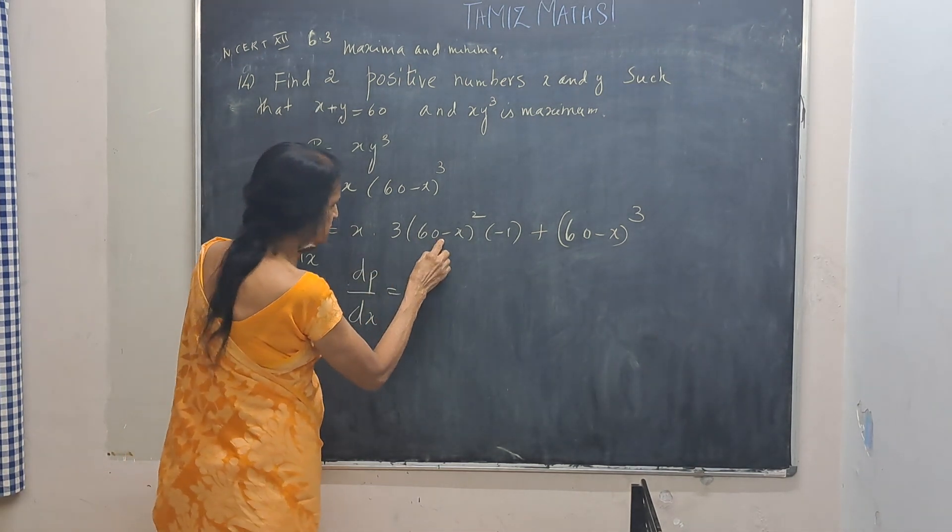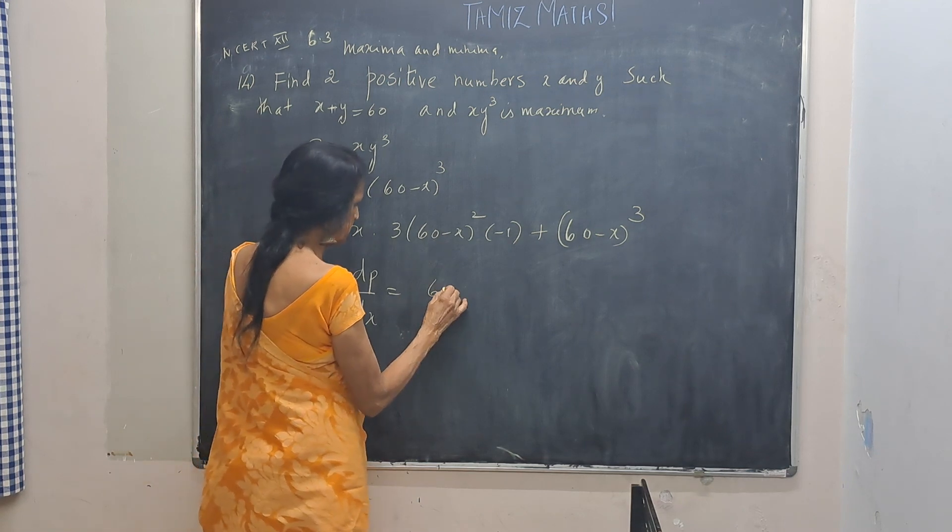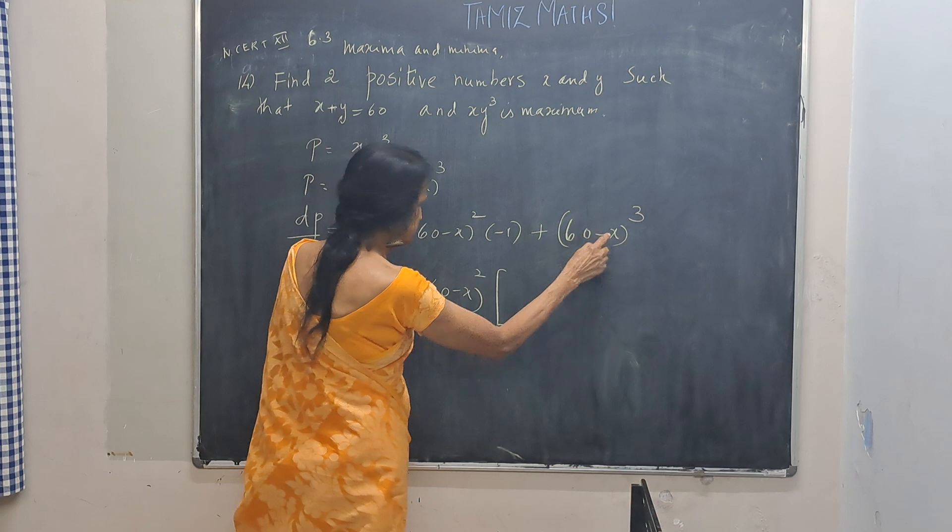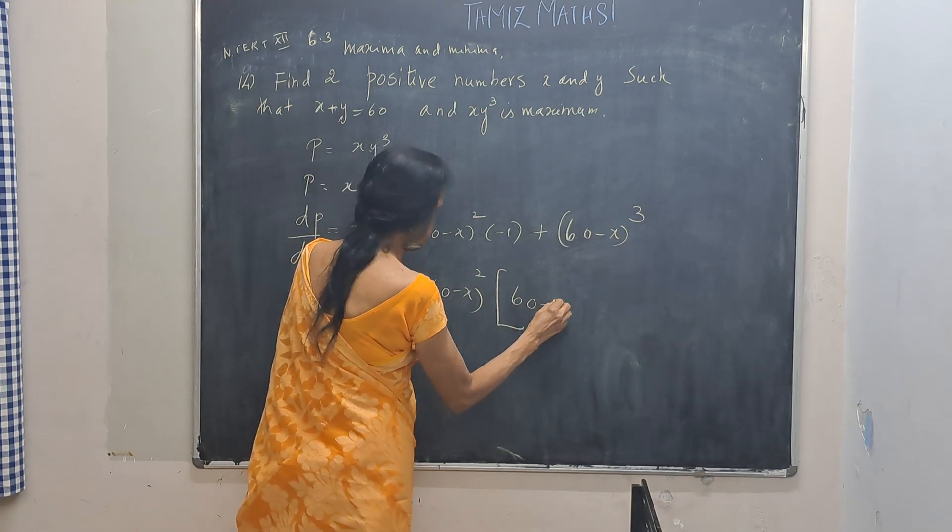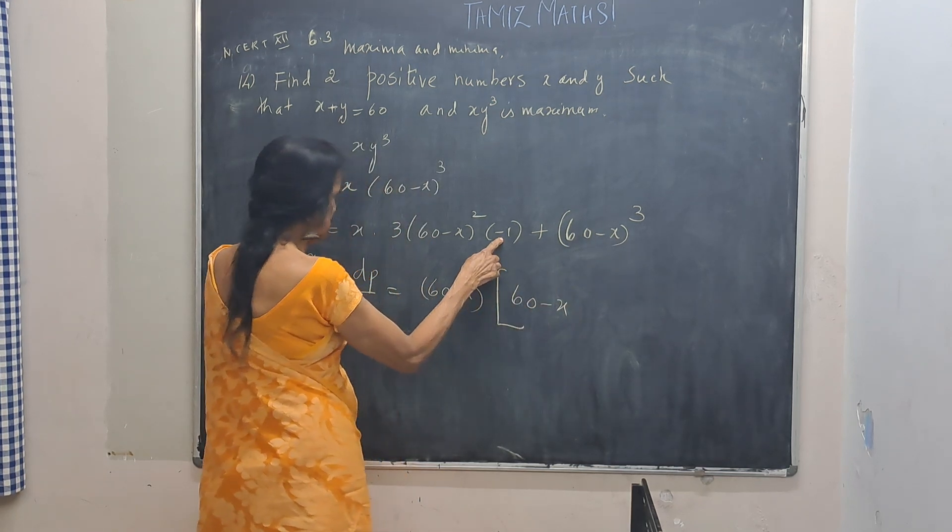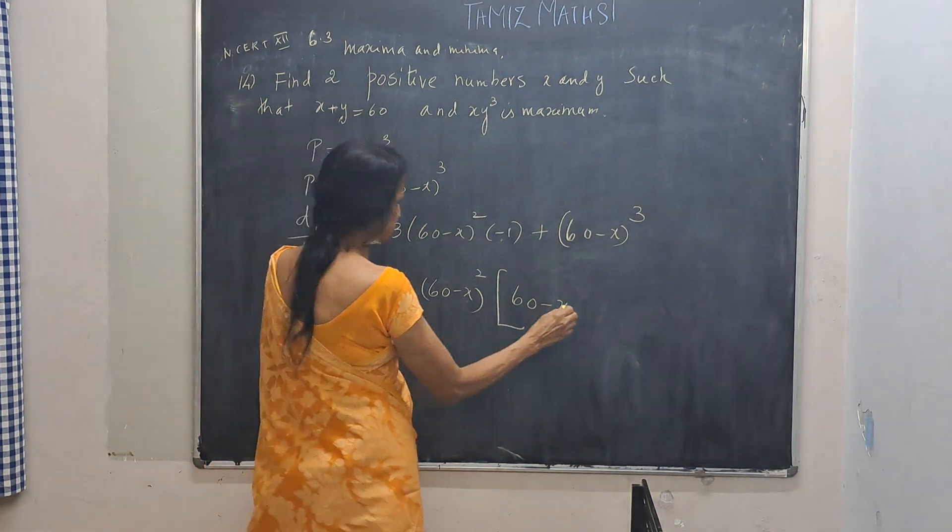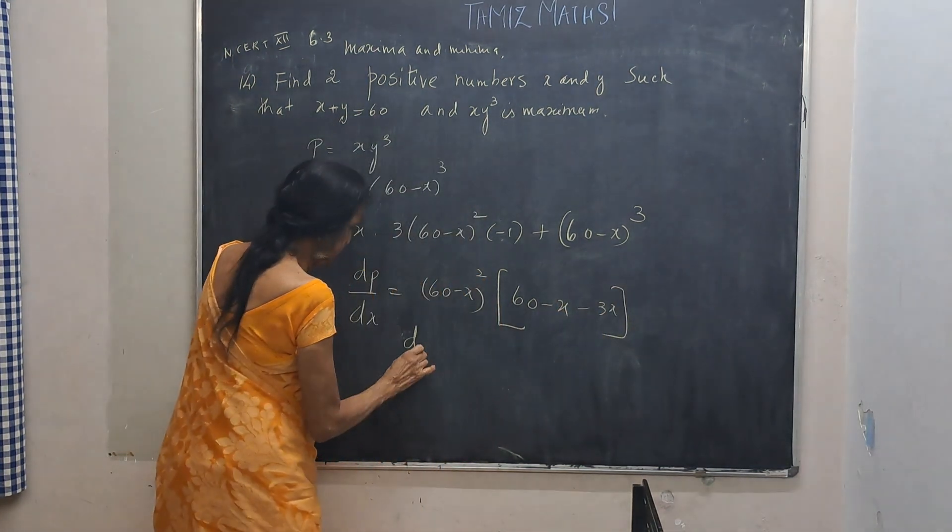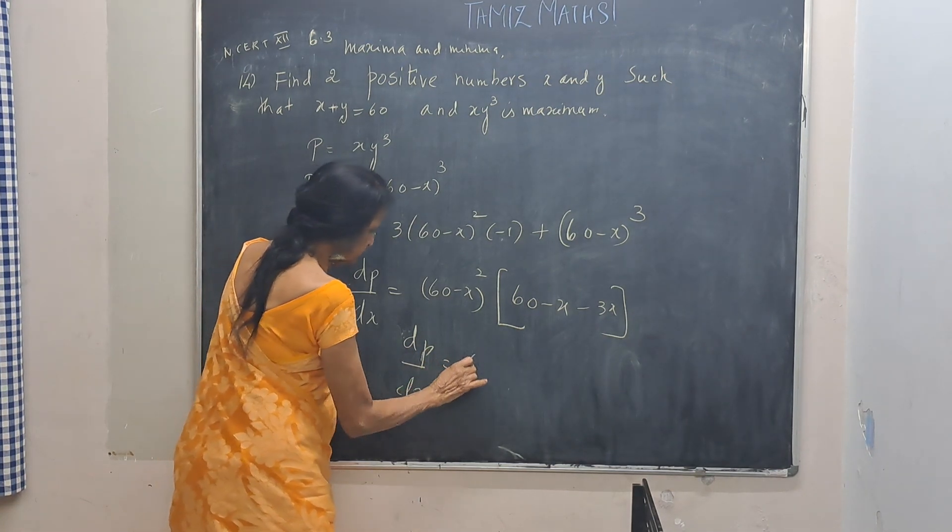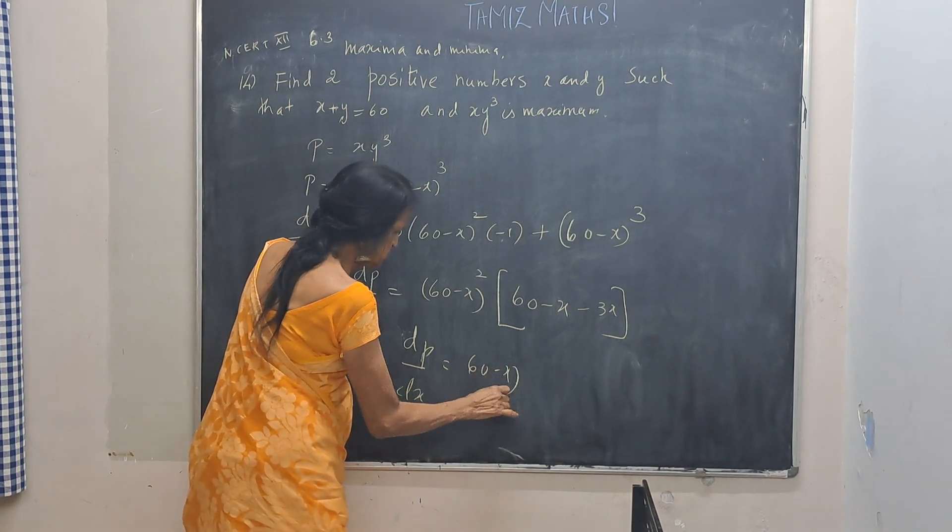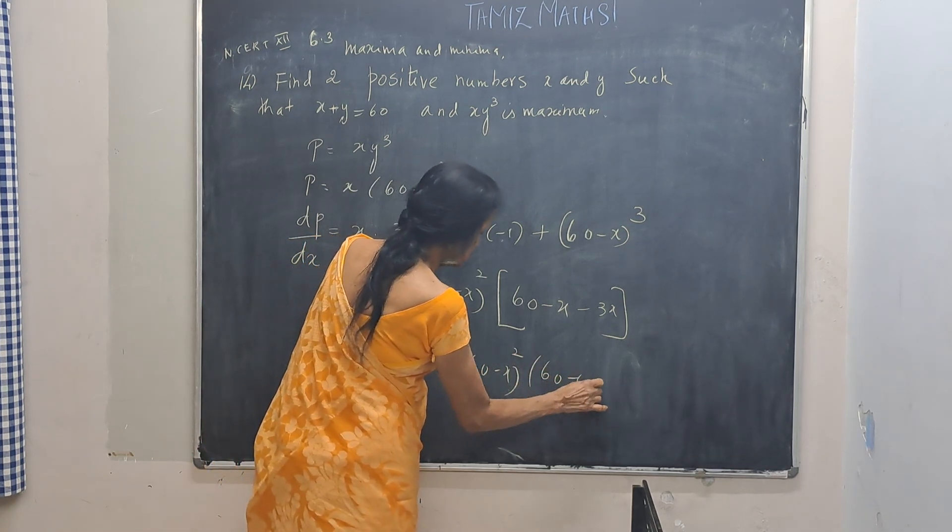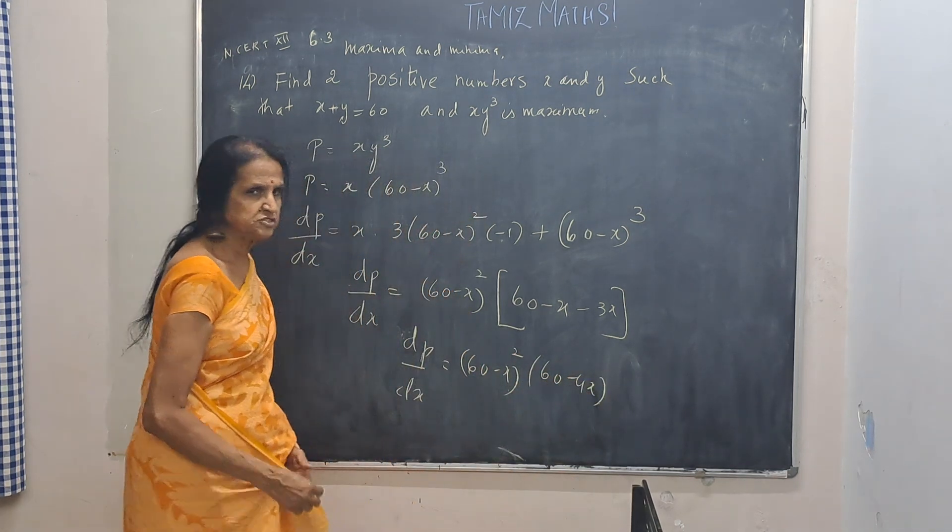Take out 60 minus x whole square outside. This will be 60 minus x. There is a minus here, and it will be minus 3x. So dP by dx is 60 minus x whole square into 60 minus 4x.